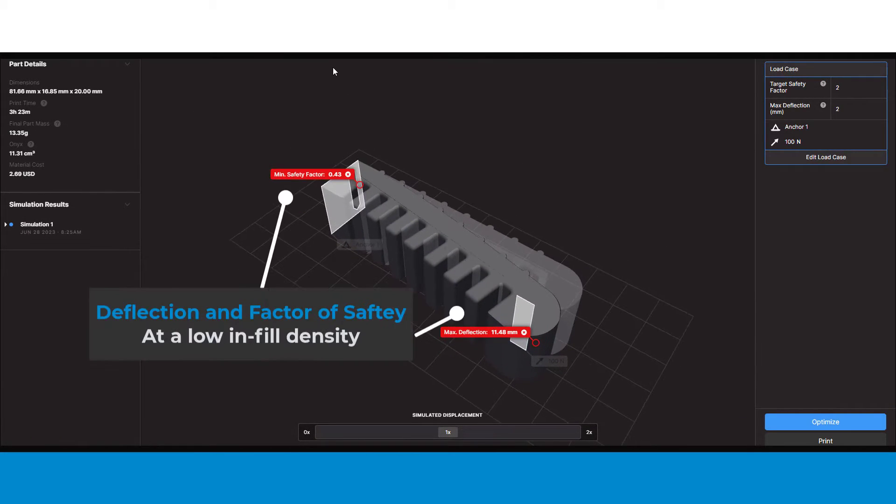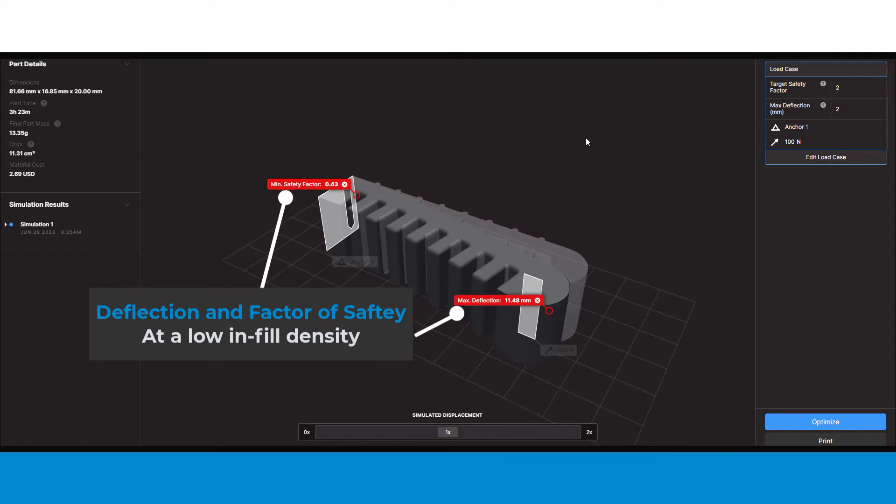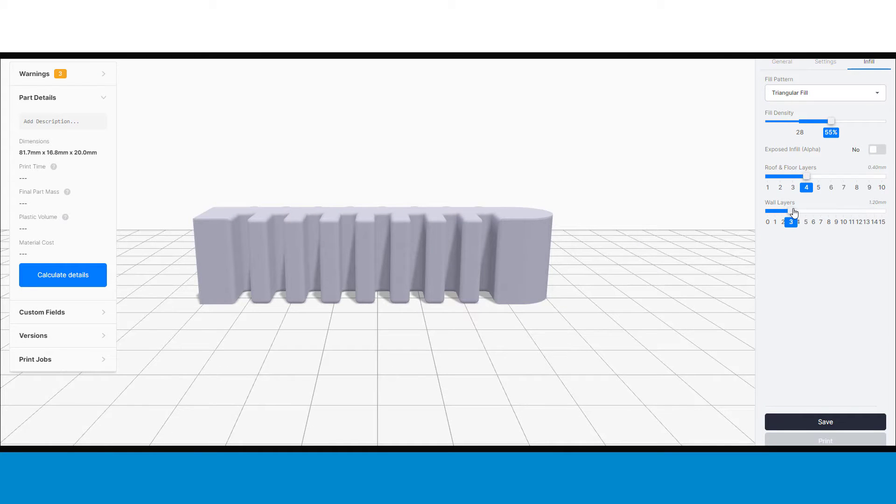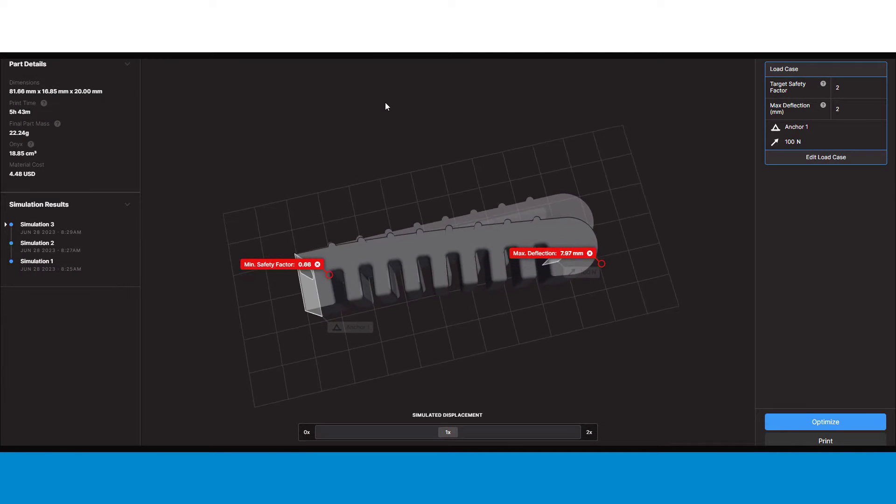We can see from this Eiger simulation that despite nothing changing geometry-wise, the lower infill density has a higher deviation in shape under force. As we increase the infill thickness, factor of safety and the strength of the part also increase along with it.